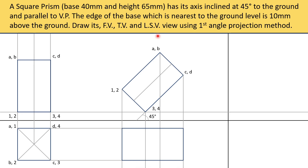You can see that when we will be viewing the object from the top, this part will be visible — as we have shown in the 3D object — so we will mark this in bold. And this part will be there but not visible, as it will be at the back of the object, so we will draw this using dotted lines. Now we have to number this: this will be 1, this will be 2, this will be 3, this will be 4 — anti-clockwise marking.